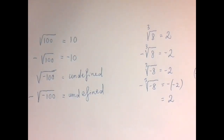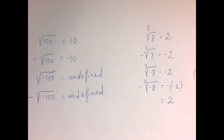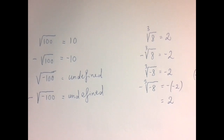Third roots are nicer than square roots because when you raise a positive number to the third power you get positive, and when you raise a negative number to the third power you get negative. Therefore every real number has a third root and there is always just one candidate — there's a uniqueness property here. Square root was kind of a mess: for positive numbers we had two candidates, and for negative numbers we had none.